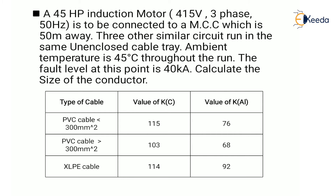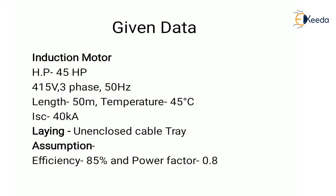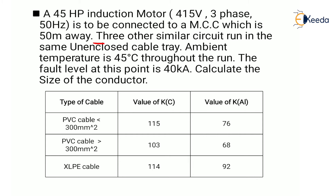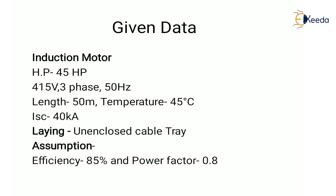Let's start with the solution. The given data: induction motor is 45 HP, 415V 3-phase 50Hz, length is 50 meters, temperature is 45°C, and short circuit current is 40 kA. The laying is unenclosed cable tray, as three other similar circuits run in the same unenclosed cable tray. We are assuming efficiency as 85% and power factor as 0.8.